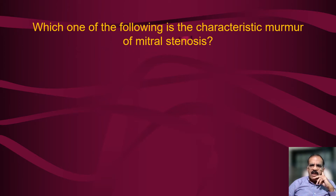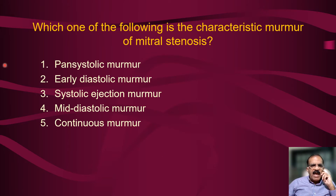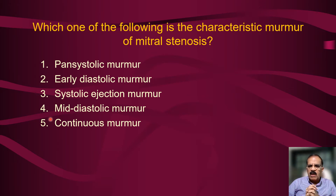Which one of the following is the characteristic murmur of mitral stenosis? Multiple options will appear and you have to figure out which one is the classical murmur heard in cases of mitral stenosis. Options: a pan-systolic murmur, an early diastolic murmur, a systolic ejection murmur, a mid-diastolic murmur, or a continuous murmur heard both during systole and diastole. Which one is correct? If you know the material, it should be very easy.